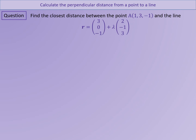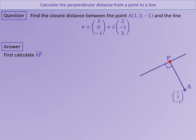This method for finding the shortest distance between a point and a line also works in three dimensions. We are going to use it to find the shortest distance between point A with position (1, 3, -1) and the line with equation R equals (3, 0, -1) plus lambda (2, -1, 3). First, we draw a perpendicular from A to the line, label the foot of the perpendicular P, and find an expression for the position of P. Because P lies on the line, P has position vector (3 + 2lambda, -lambda, -1 + 3lambda).